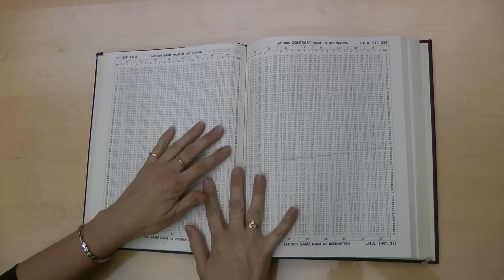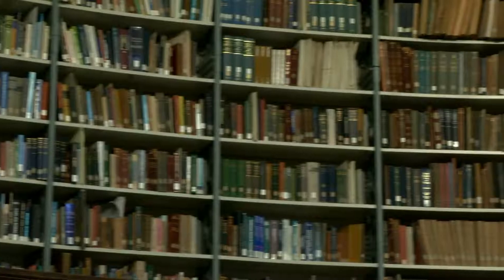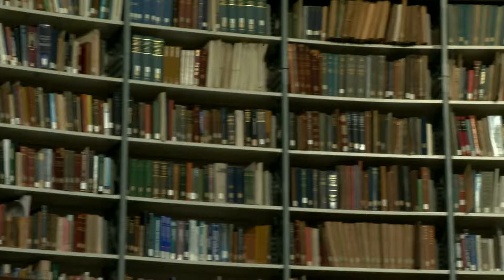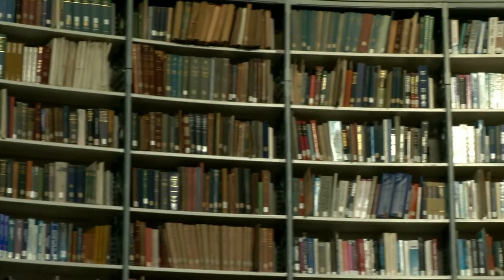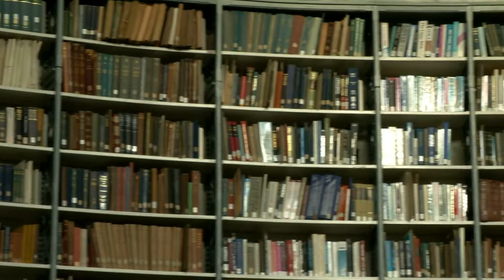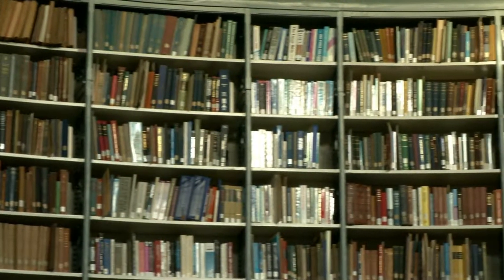Even so, by keeping the assumed latitude and local hour angle restricted to zero arc minutes, our sight reduction tables still take up six volumes. Imagine how much larger these tables would be if we included fractions of a degree — it would be difficult to carry them on a ship.